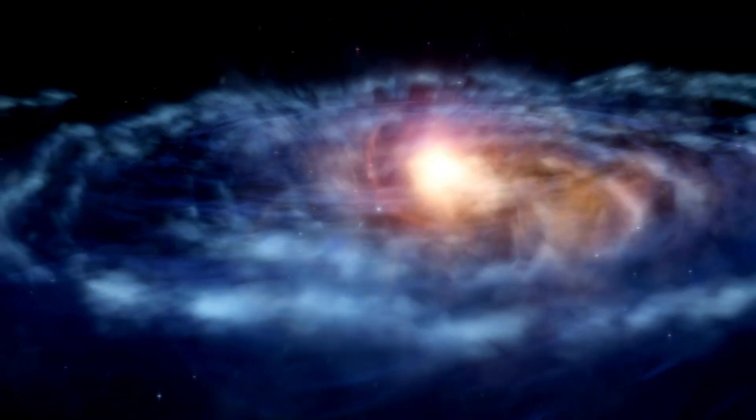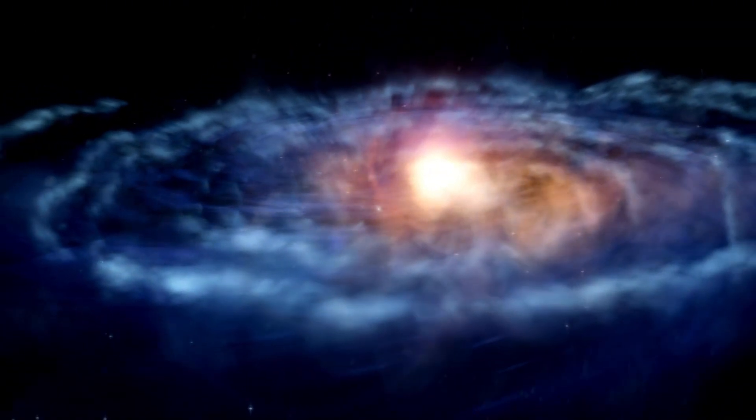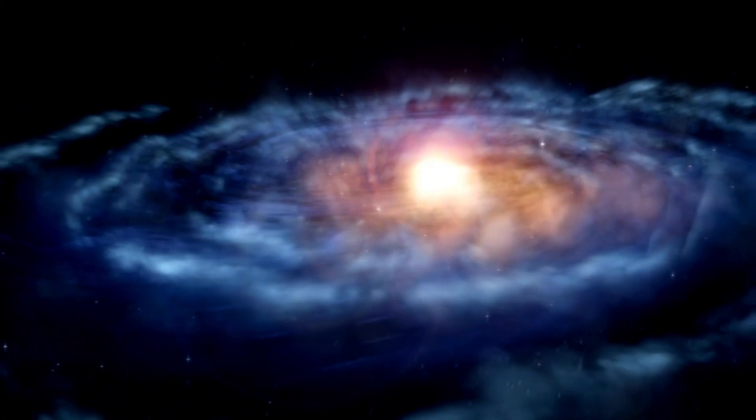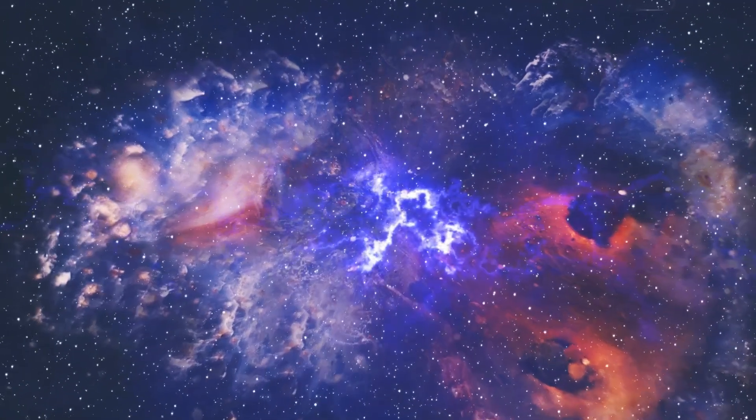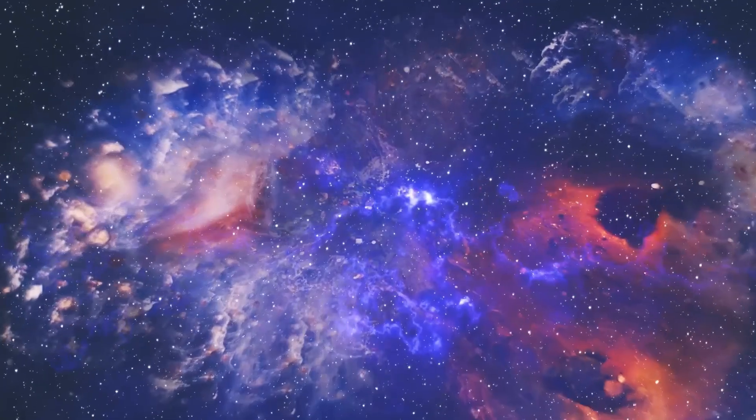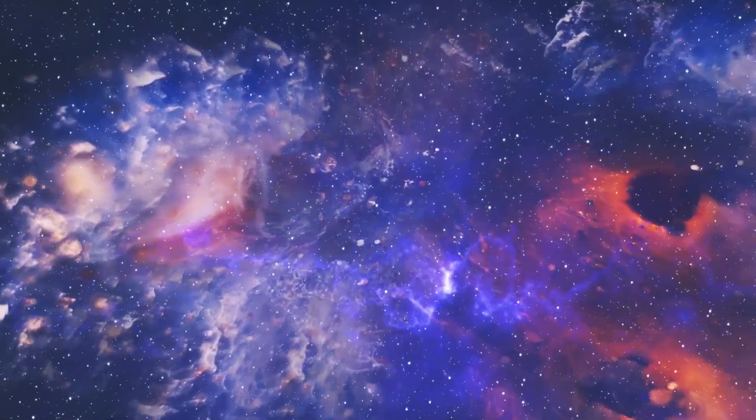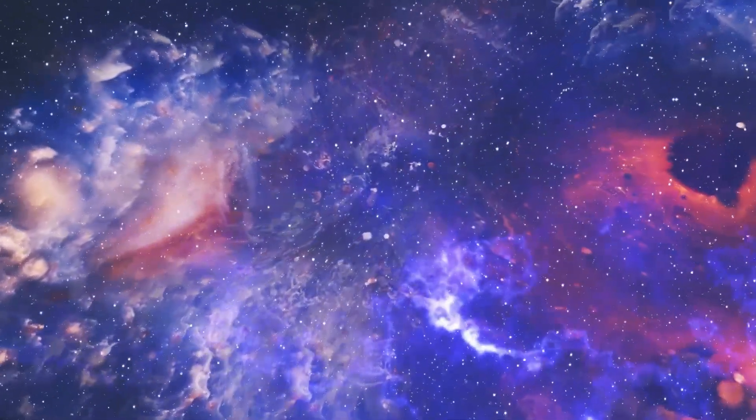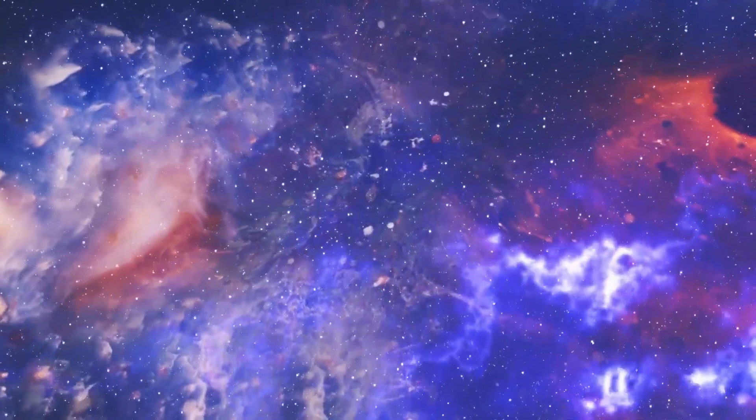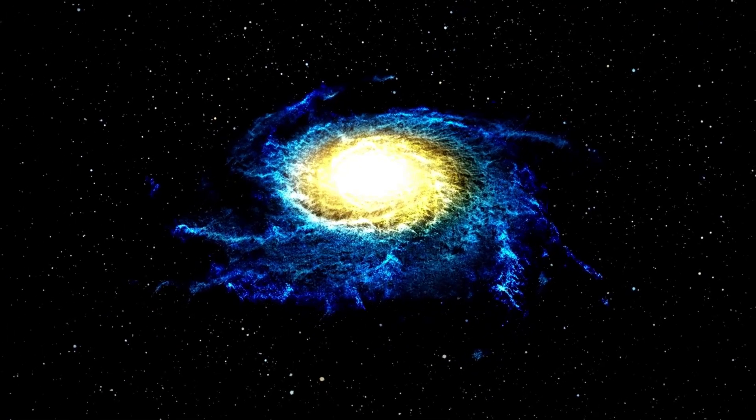Why did Betelgeuse diminish suddenly and out of sync with its regular cycle? When it won't likely explode for another 100,000 years, Betelgeuse was evicted from its home in the Orion OB-1 Association, which comprises the stars in Orion's belt, and has been seen moving through the interstellar medium at a speed of more than one light-year per year.